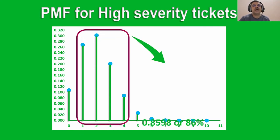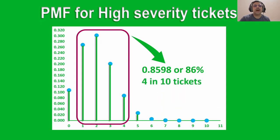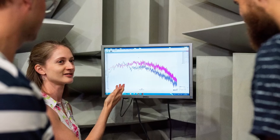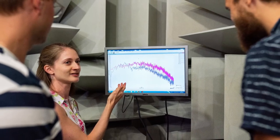If we observe these numbers and the graph carefully, we see that the probability of getting up to four high severity tickets is 0.8598, or about 86%. In other words, you have an 86% chance that four in 10 tickets — that is 40% of the tickets — would be high severity tickets. So instead of the entire team being on alert, you could plan for two engineers and one subject matter expert to be kept on standby every weekend.